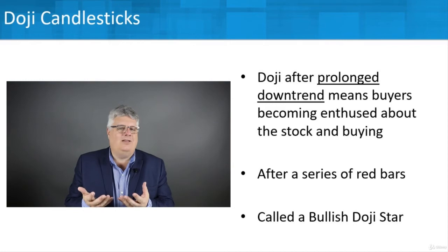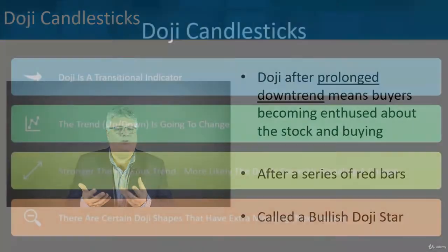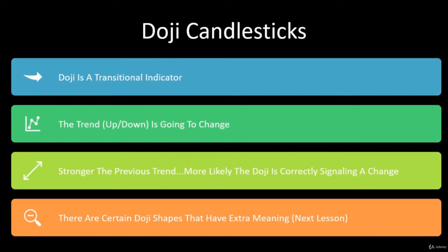What do we learn from that? A doji is a transitional indicator, not a continuation indicator. It's going to tell us that a transition may be coming — that the trend, whether going up or down, is going to change. So if you're investing along a buying trend and you start seeing a doji, you might say it might be time to get out and sell because that upward trend might be willing to change. It depends on the way the trend is going.